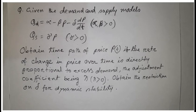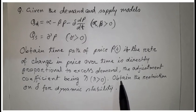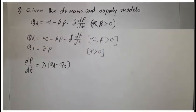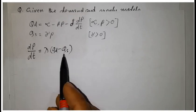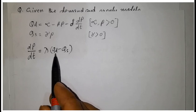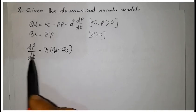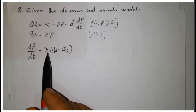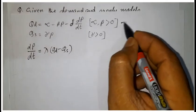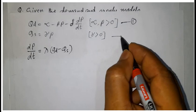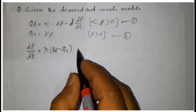If the rate of change in price over time is directly proportional to excess demand, with adjustment coefficient lambda where lambda is greater than zero, then dP/dt equals lambda times the difference between quantity demanded and quantity supplied — that is, dP/dt equals lambda times (Q_D minus Q_S). Equation 1 is the demand equation, equation 2 is the supply equation, and equation 3 is the rate of change in price over time.